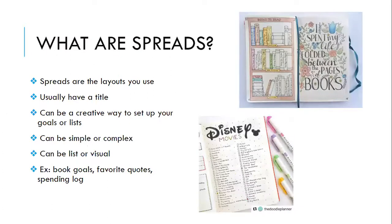So what are spreads? Bullet journals are often organized in spreads — a spread is basically a layout on a page. They usually have a title or a theme, and you can set these up in a creative way. They can be list-organized or more visual. The top picture has a quote on the right side with detailing and flowers and designs around it, and the books-to-read list is organized very visually with a bookcase spread. Conversely, a movies list is just a title at the top with a checklist underneath — it can be simple or complex.